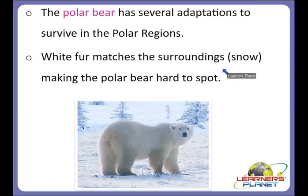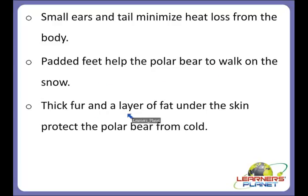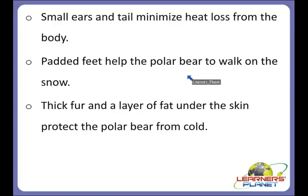The polar bear's small ears and tail minimize heat loss from the body, padded feet help it walk on snow, and thick fur with a layer of fat under the skin protects it from cold. Animals must adjust to changes in their environment, the most obvious being the lengthening and shortening of daylight hours and the increasing and decreasing of temperature as autumn turns into winter. Survival at the polar regions is very difficult for both animals and plants.